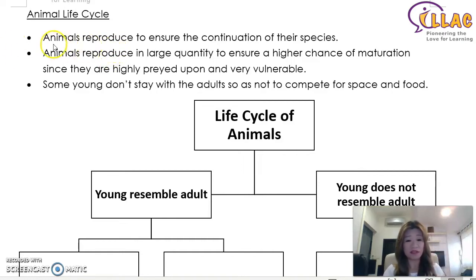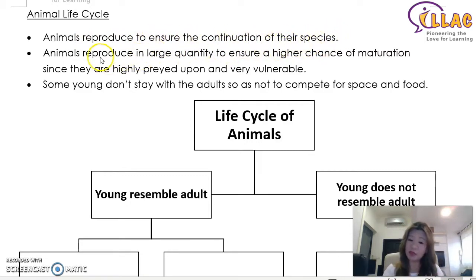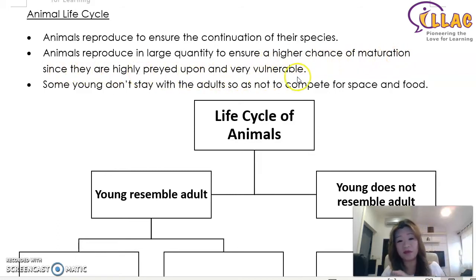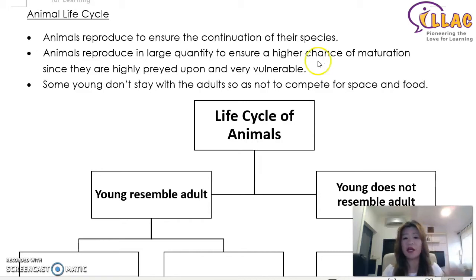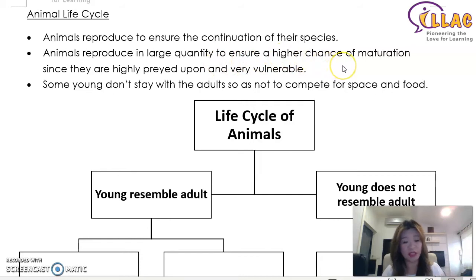One thing you need to remember is that animals reproduce to ensure the continuation of their species. The next one to memorize is that animals reproduce in large quantity in order to ensure a higher chance of maturation, since they are highly preyed upon and very vulnerable. The difference is that normal animals, like you and I, reproduce to ensure the continuation of our species and don't have a lot of offspring at one time. However, cockroaches are animals that reproduce in large quantity, to ensure a higher chance of maturation.